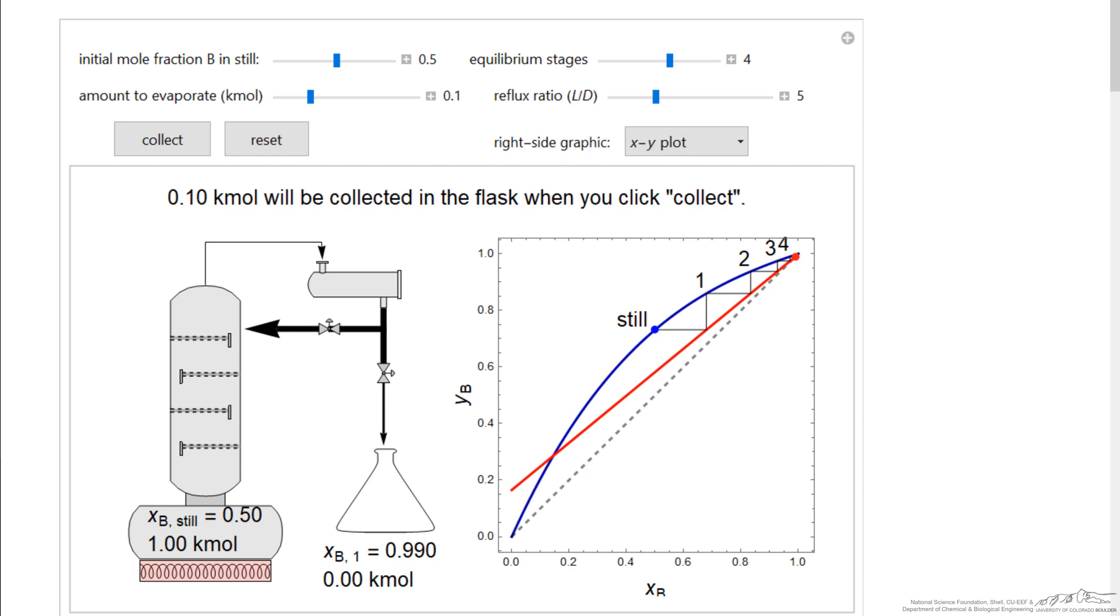And the mole fraction we're collecting is 0.99. So you can see with batch distillation, we have the potential to get very high concentrations, very high separations. And that's the point here, the red point.